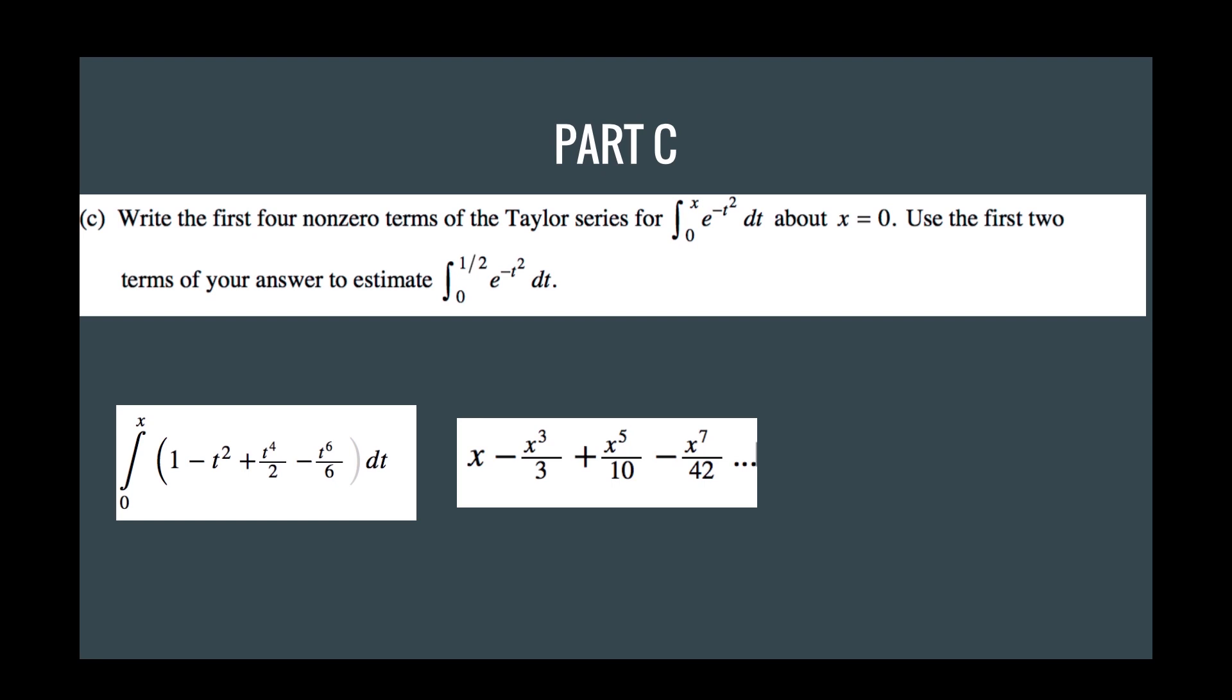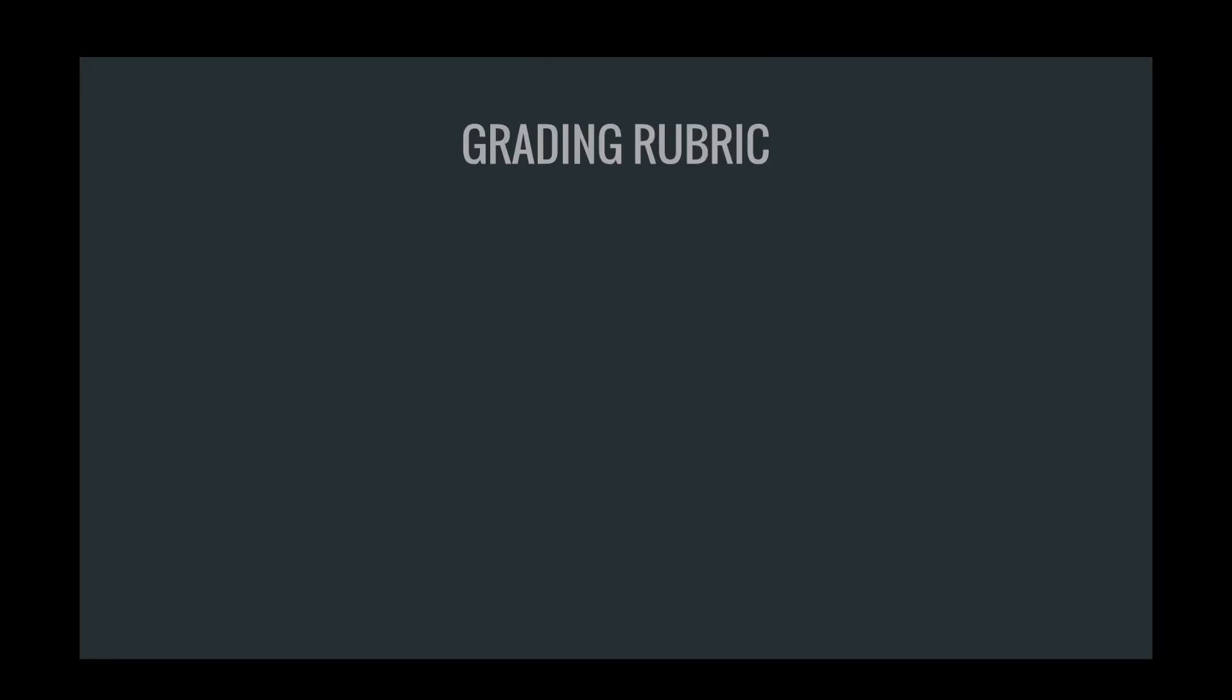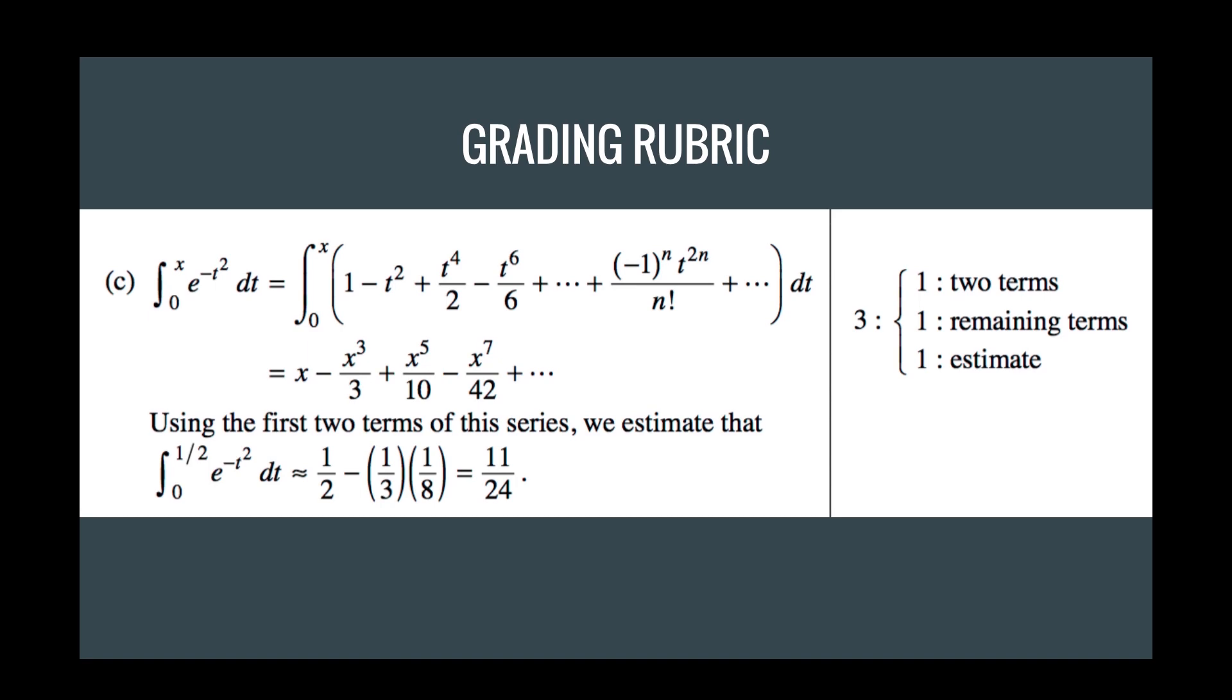And then the good thing is that we only need to use the first two terms to estimate the value of one half, and you just plug that in to the first two values, and just do some basic mathematics, and you'll get 11 over 24. So this is an easy problem again, and it gives you three points. One for the first two terms, one for the remaining terms, and one for the estimate. So that's another three points.